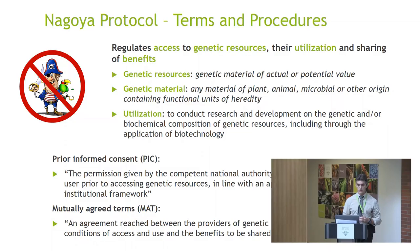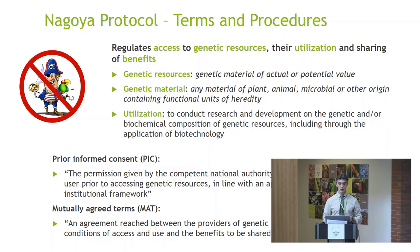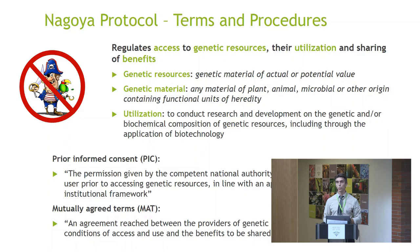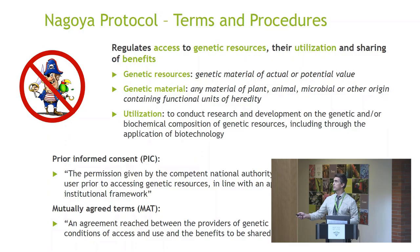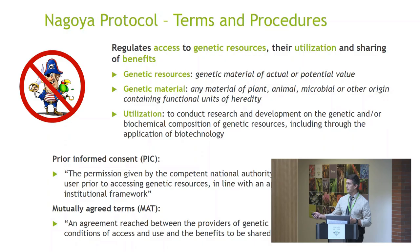The underlying goal of the Nagoya Protocol is to curb biopiracy. There are definitions provided for what genetic resources are, what genetic material is, and what utilization means. These are interpreted in various forms by different legal wordings used by different countries, with international translation overlaid on top of that. There is some ambiguity as to what exactly these terms represent, because as a consensus organization, the convention uses fairly vague wording that can be interpreted in various ways.